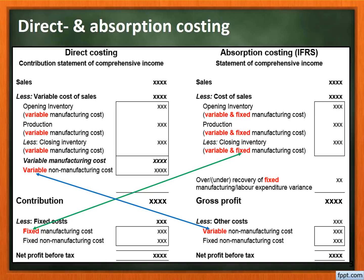The following slide demonstrates the difference between the direct costing and the absorption costing income statement. I'd like to bring to your attention the variable cost of sales and the cost of sales. You will notice that under the direct method, the variable cost of sales only considers variable costs, while in the absorption costing method, the cost of sales includes both the variable and fixed manufacturing costs.